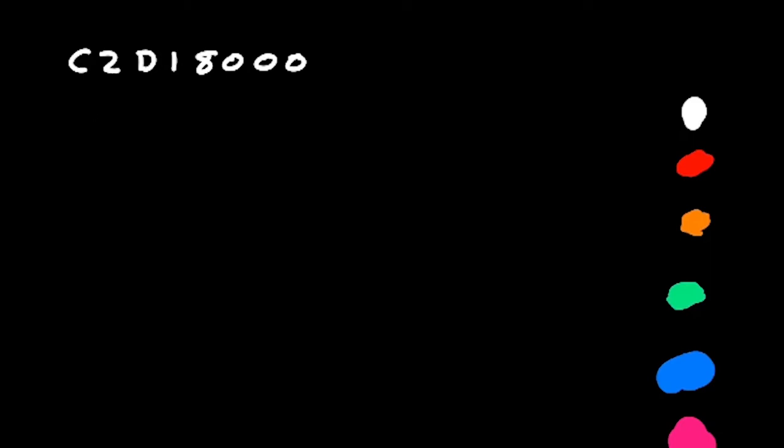We can do this by using the fact that it's in base 16, which is 2 to the power of 4, which means each of these letters stores 4 bits of information. So, C is 12, 2 is 2, D is 13, 1 is 1, 8 is 8, and 0s are 0s.